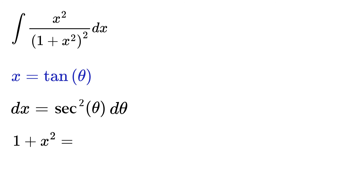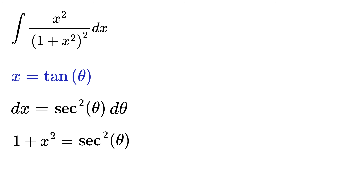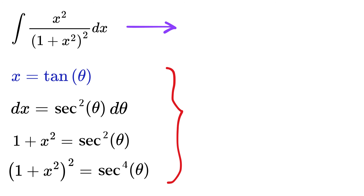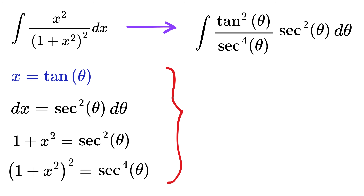Then 1 plus x squared will be 1 plus tan squared theta, or sec squared theta, so its square will be sec theta raised to power 4. On substituting these values, the integral will become this. Sec squared will be cancelled, and we will be left with this.